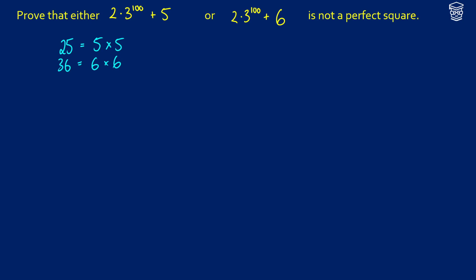Let's say that we have two numbers. These are going to be two positive integers in Z plus, and we're going to pick n plus 1 and n. These are consecutive numbers, and the reason we're doing this is because the difference between these two numbers is just 1.